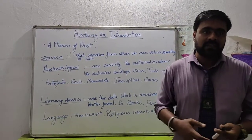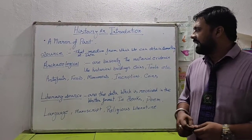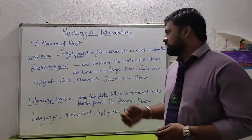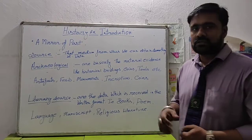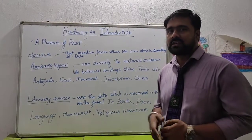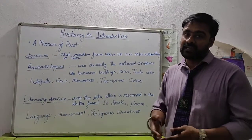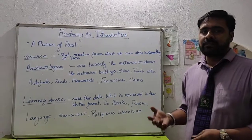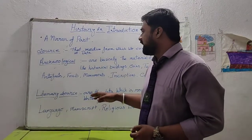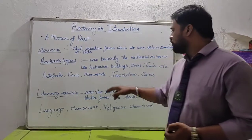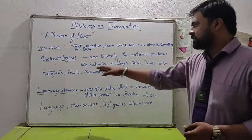For example, the tools which our ancestors used to harvest food or hunt animals will be considered as archaeological sources. Historical buildings are also one of the most important archaeological sources because they tell us about how that structure was made. Coins tell us about the economic aspects of a country or state. The main things we study in this portion are artifacts, fossils, monuments, inscriptions, and coins.